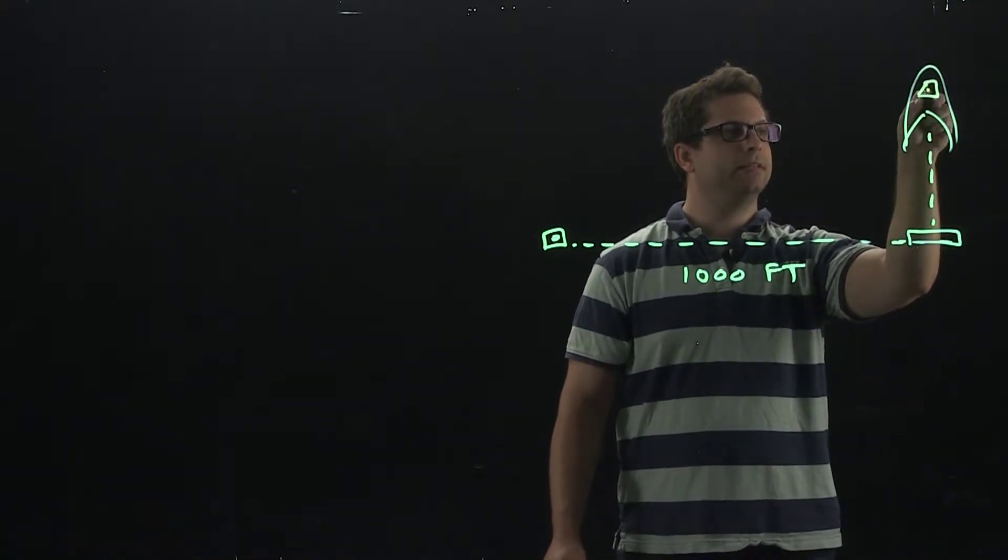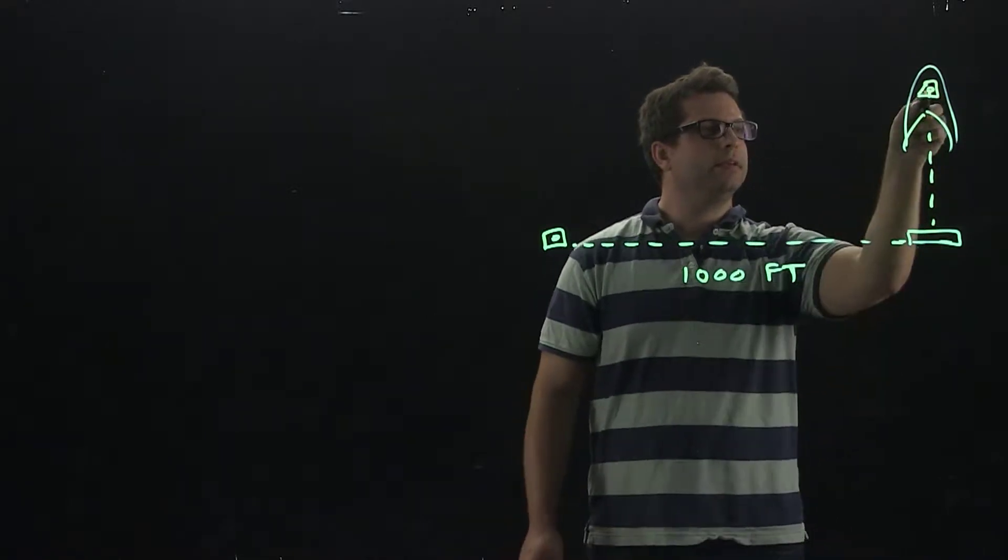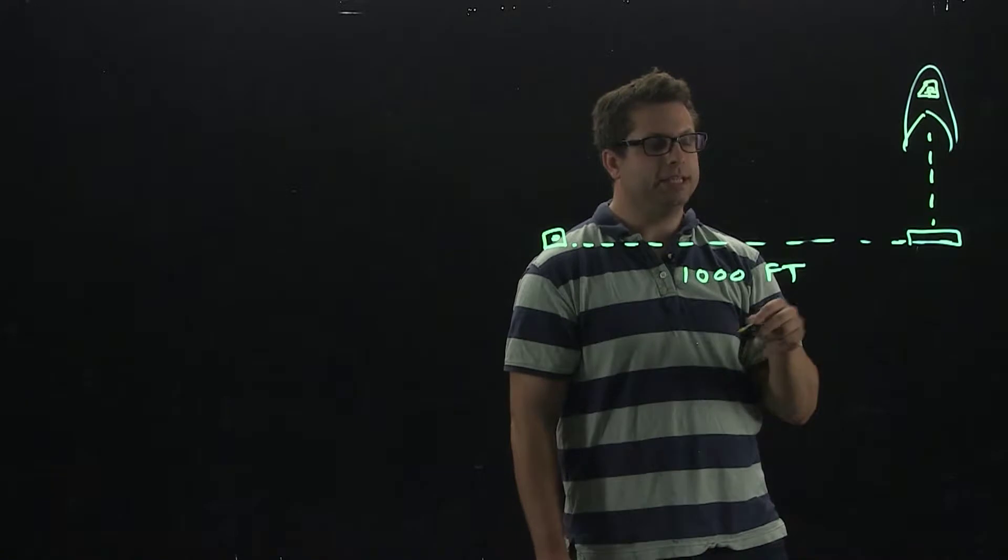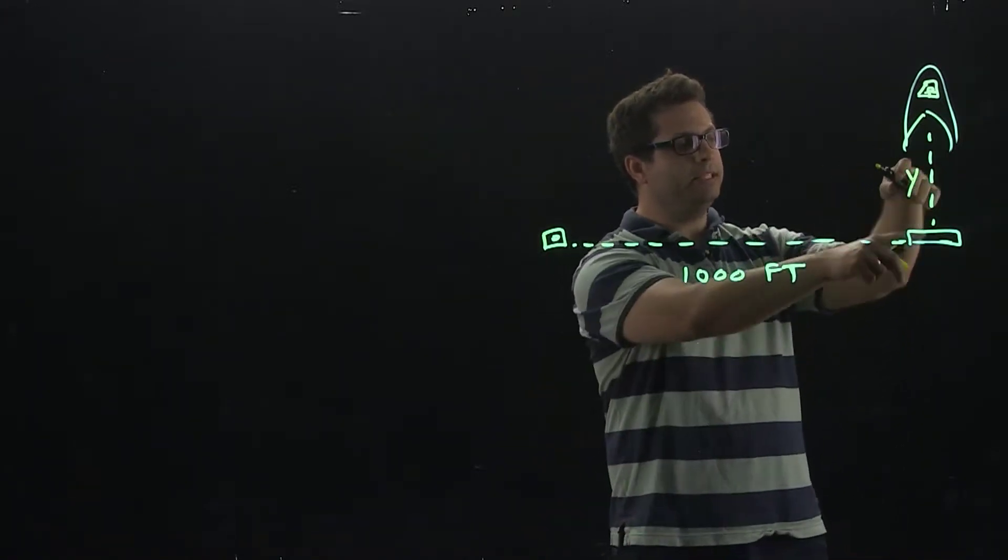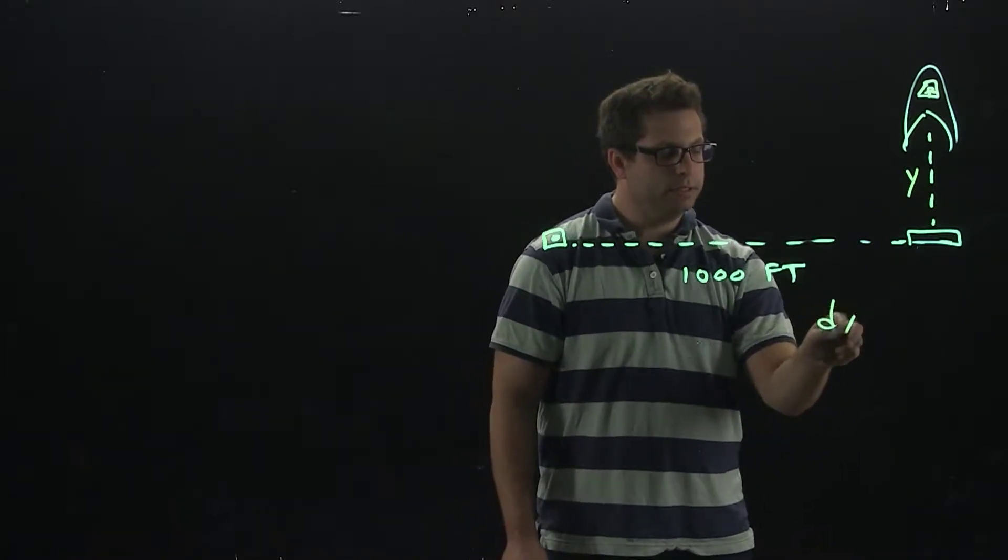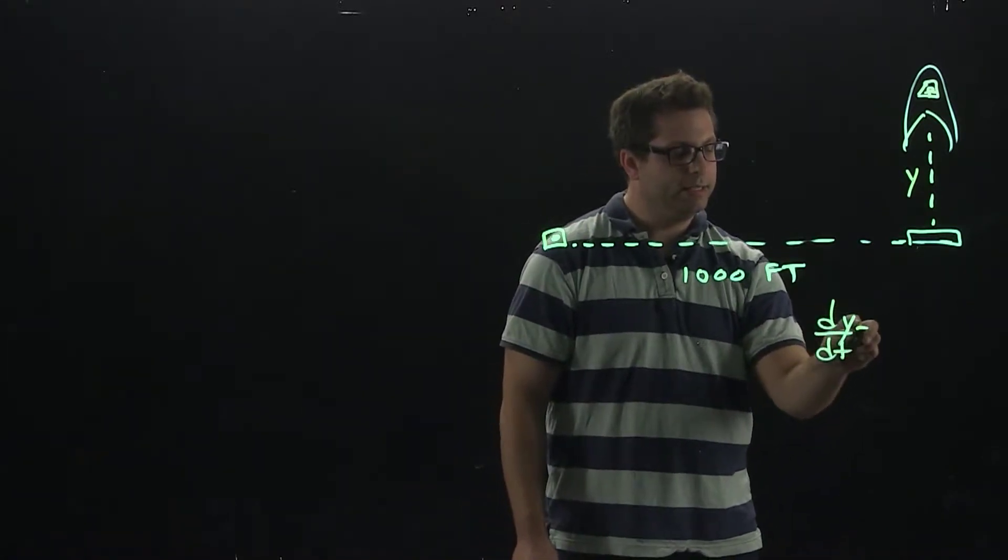Now, the rocket's going up vertically. We have that, a little person in there. There we go, and it's rising at 500 feet per second. Let's call that Y. That will be the distance the rocket's traveled vertically. That means I know dy/dt is 500.